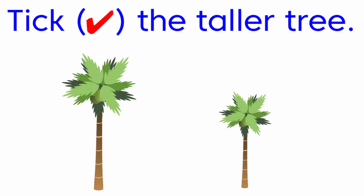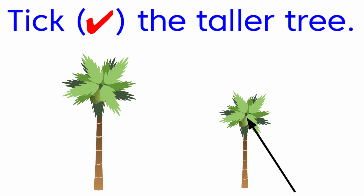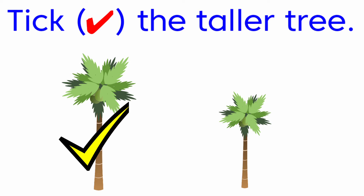Next one, tick the taller tree. They have given two trees. Among these 2, we are going to tick the taller tree. See which is tall — the first one is tall. And which is short — the second one is short. So we are going to put a tick for the first tree.